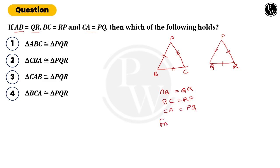So on what basis are these two congruent? Yes, side side side congruency rule. Triangle ABC is congruent to triangle QRP.